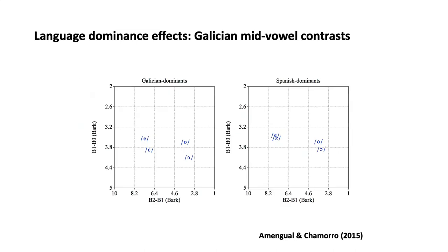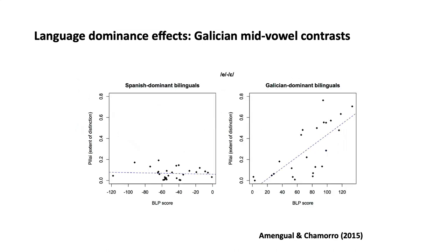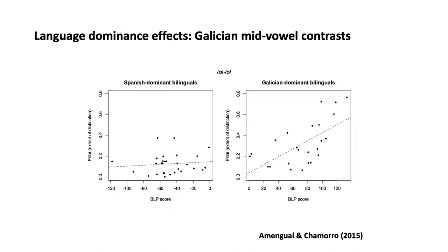Looking at the same population's production, Spanish dominant bilinguals are merging these categories quite a lot more. Using the PLI measurement — which quantifies the degree of overlap between the two vowel categories — we can individually quantify how much overlap exists in production. We can see very strikingly that Galician dominance predicts how much overlap there is between these categories as you become more balanced or closer to the Spanish dominant group. This holds for both front and back mid vowels.